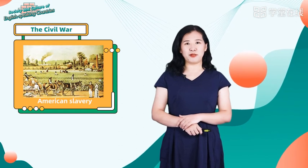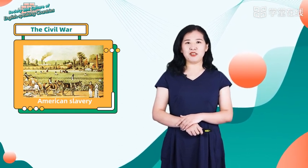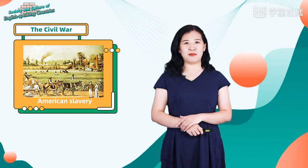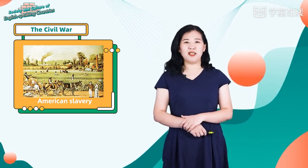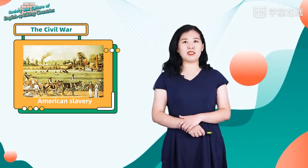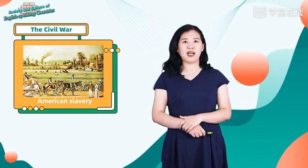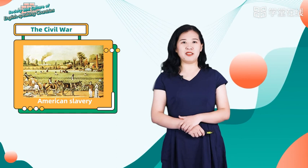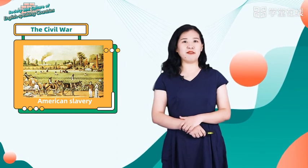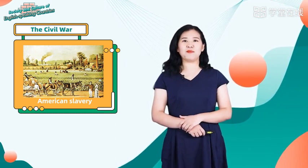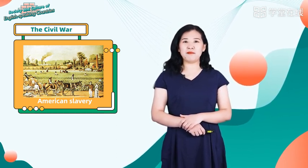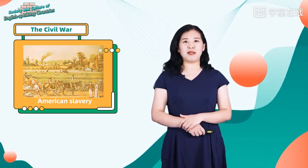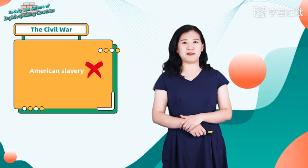American slavery existed after the first immigrants set up their settlements. In the South, the growth of cotton and tobacco plantations had made the Southern economy increasingly dependent on slave laborers. Meanwhile, many Americans, especially in the northern states, began to oppose slavery.